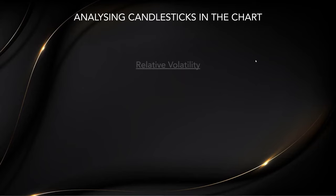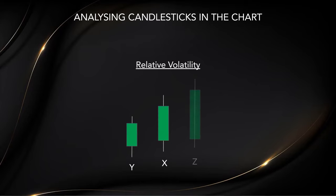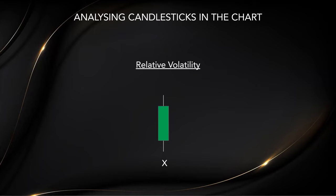Moving on to more basic candlestick analysis: volatility simply means the candle body size. Candlestick X is more volatile compared to candlestick Y, but less volatile compared to candlestick Z.